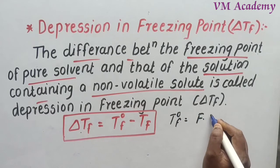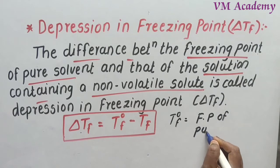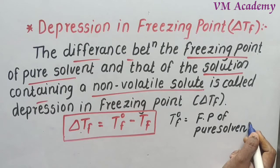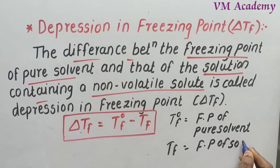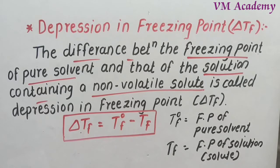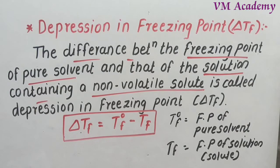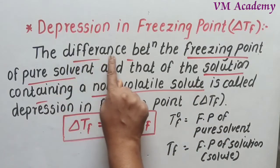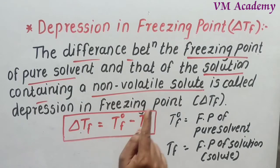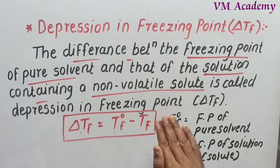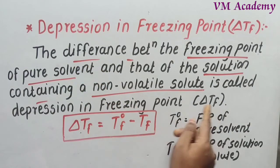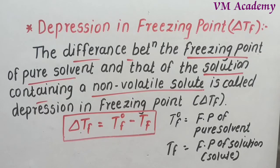TF is the freezing point of the solution that contains the non-volatile solute — in which solute particles are present. The difference between these two is delta TF. Depression in freezing point is defined as the difference between the freezing point of the pure solvent and that of the solution containing non-volatile solute. Because non-volatile solute is present, the freezing point decreases, while the pure solvent's freezing point is higher.